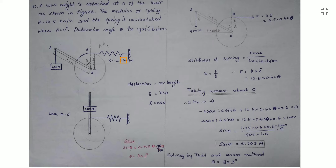A spring is attached to a lever. The lever has a length of 1.6 meters and it is attached with the help of a disc of radius 0.6 meters. A weight is supported at the end A of the lever. The system is in equilibrium.